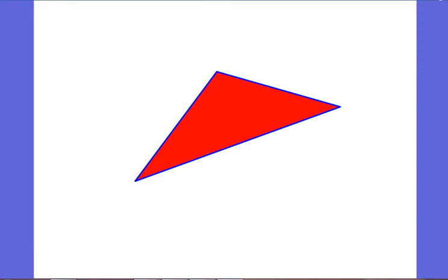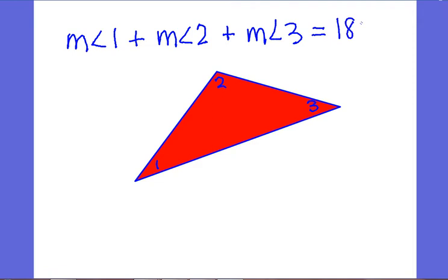So let's put this in our notes. We're going to call this angle 1, angle 2, and angle 3. And we're going to write in our notes that the measure of angle 1, this is my angle in degrees, added to the measure of angle 2, that's angle 2 in degrees, added to the measure of angle 3, that's angle 3 in degrees, always has to equal 180 degrees.